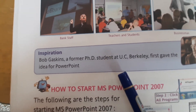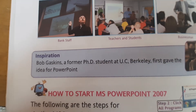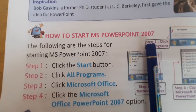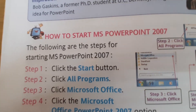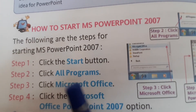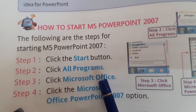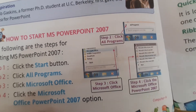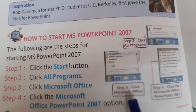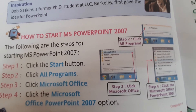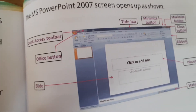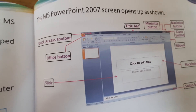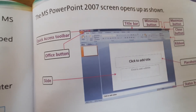Now, how to start MS PowerPoint 2007 — it is very easy. The same steps that were involved with MS Word can be used here. Click the Start button, then click All Programs, then click on Microsoft Office, and search for this application to open it. We will end today's class here. You need to go through the various elements given on the next page, and in the next class we shall go through these elements together.